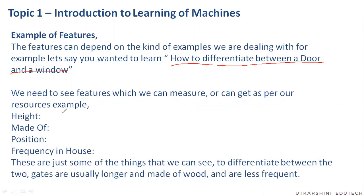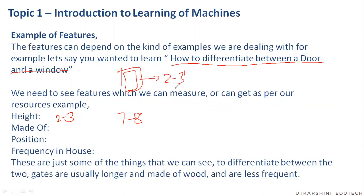For a window, the height will definitely be around two to three feet. For doors, it will definitely be seven to eight feet; otherwise we wouldn't be able to cross it. So the values two to three versus seven — that is what the computer learns. It learns: okay, this is a window — this is something that is two to three feet.